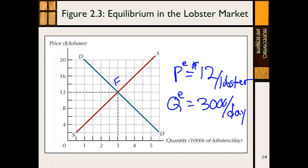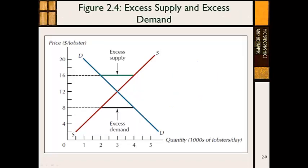The equilibrium price and quantity here is when price is $12 and quantity is 3,000 lobsters per day. We'll put a little 'e' on top of the P — that says this is an equilibrium price — and the equilibrium quantity with a little 'e' is going to be 3,000 lobsters per day. In equilibrium, producers want to produce 3,000 lobsters per day, and consumers want to purchase 3,000 lobsters per day. In a well-functioning market with no outside interference, the price and quantity will automatically become 12 and 3,000.